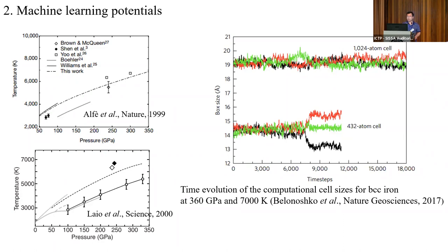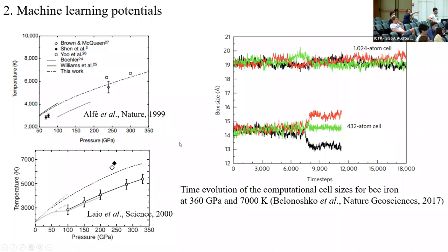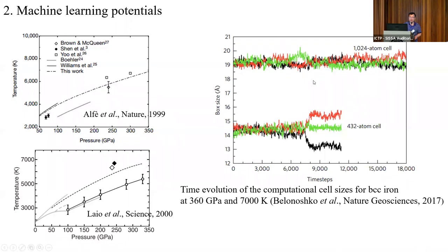Question: The interpretation of that data seems a bit dubious to me. If the transition from BCC to FCC (or HCP) is a rare event, this is a single observation in the 432-atom cell. You have a longer trajectory in the larger cell where you don't observe the event — but is that really proof of a size effect? Maybe if you ran the smaller cell for longer it would also switch. Answer: That's also the point we would like to investigate. For ab initio MD, 432 atoms is about the largest cell feasible, and such simulations would take around one year to complete.